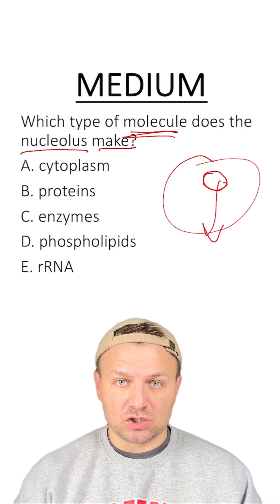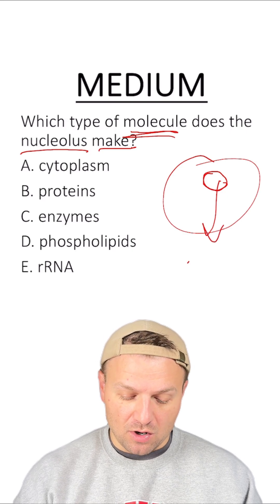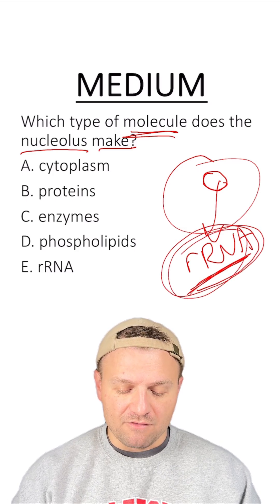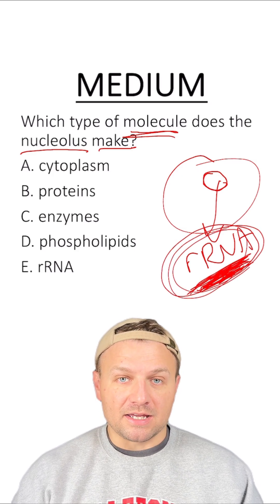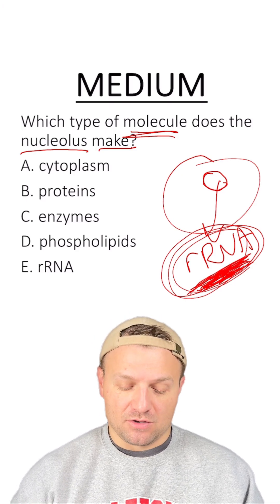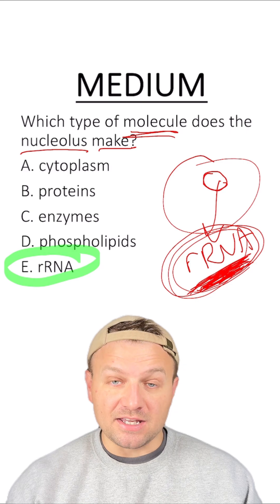It has a specific job to make something called rRNA. This is a medium difficulty question because a lot of students forget the role of rRNA. And this rRNA is part of the ribosomes which are going to be needed outside of the nucleus. So the answer here is E, rRNA.